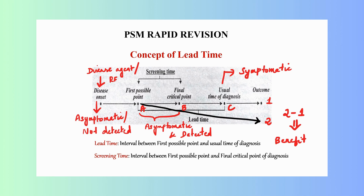Welcome back to my channel, Concepts in Community Medicine. Now let's understand the concept of lead time in screening. Consider this point as the disease onset — it is when a disease agent enters a human body, or when the risk factors of a particular disease are present in an individual. At this stage, the person is asymptomatic and you may not be able to diagnose the disease.